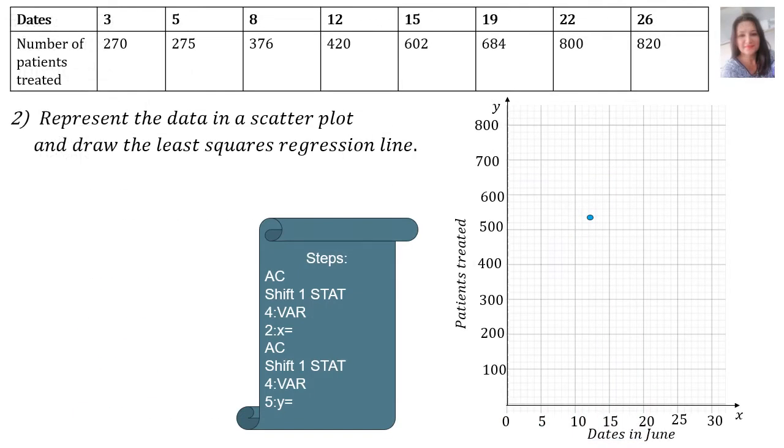Question 2 wants us to represent the data in a scatter plot and draw the least squares regression line. First of all, let's quickly plot the points. The first one already flew in: 3, 270, then 5, 275, then 8, 376, then 12, 420, then 15, 602, then 19, 684, then 22 and 800, and 26 and 820. Then, we also need the equation of the least squares regression line, since we want the y intercept, this 161.24.